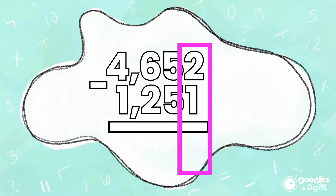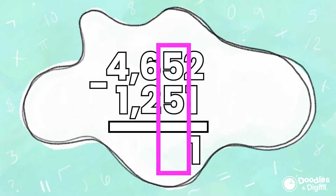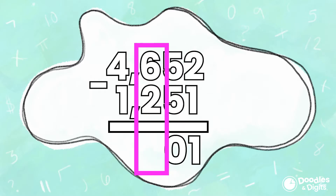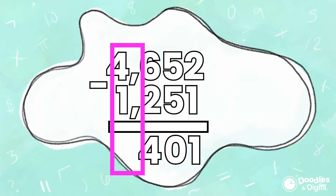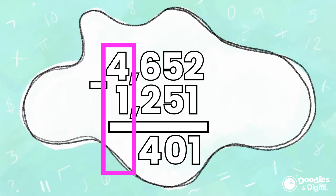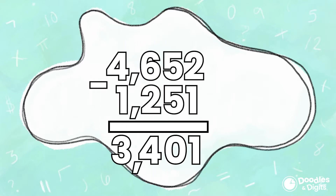Both 2 and 1 are in the ones place, so we can easily do 2 minus 1 equals 1. Now the tens place: 5 minus 5 is 0. The hundreds place: 6 minus 2 is 4. And finally the thousands place: 4 minus 1 is 3. So this is our answer. If we hadn't lined it up correctly, we wouldn't be subtracting the correct place values.